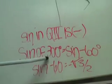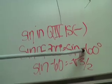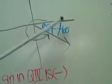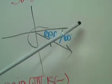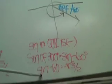We write sine of 300 equals sine of negative 60, where 60 is the reference angle of 300. You get the reference angle by calculating 360 minus 300, which equals 60.